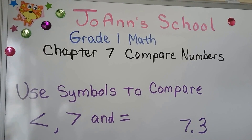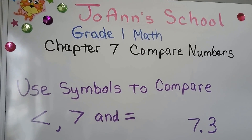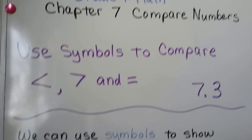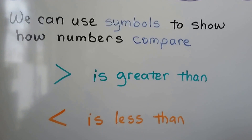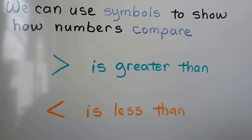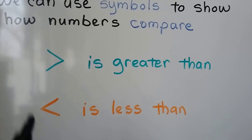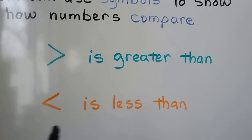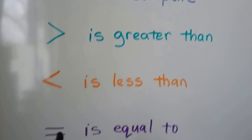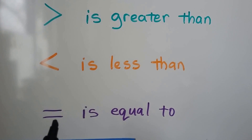Use symbols to compare less than, greater than, and equal to — lesson 7.3. We can use symbols to show how numbers compare. This symbol means 'is greater than,' this is 'less than,' and this is the symbol for 'is equal to.'